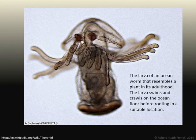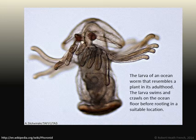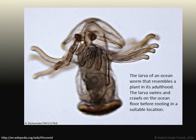This is a picture of the larva of an ocean worm that resembles a plant in its adulthood. It swims and crawls on the ocean floor before rooting in a suitable location. It's a jellyfish that in its late life cycle roots in a location and stays there, much more like a plant — thus illustrating the relationship between the plant kingdom and the animal kingdom.